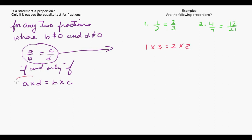So one times three is three, two times two is four. These are not equal, so this statement here is not a proportion.